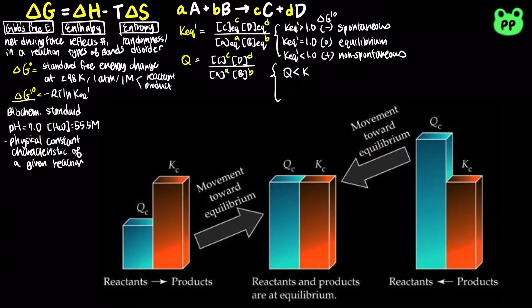When Q is less than K, the reaction proceeds forward. When Q equals K, the reaction is at equilibrium. And when Q is greater than K, the reaction proceeds in the reverse direction.